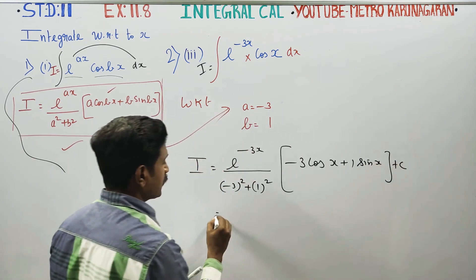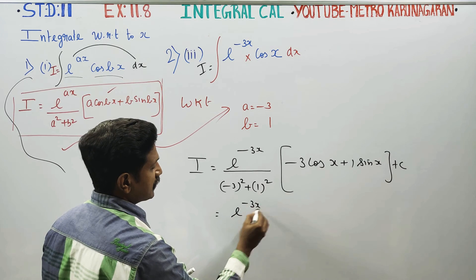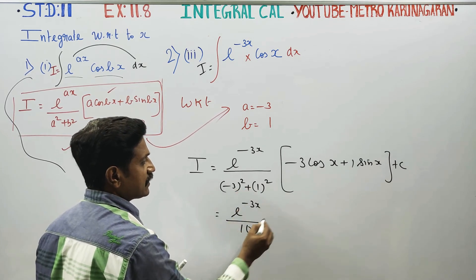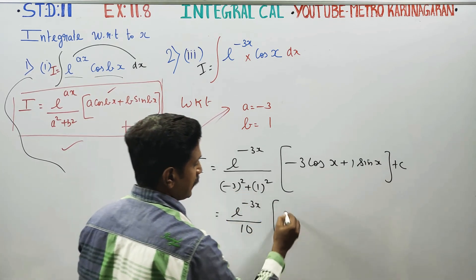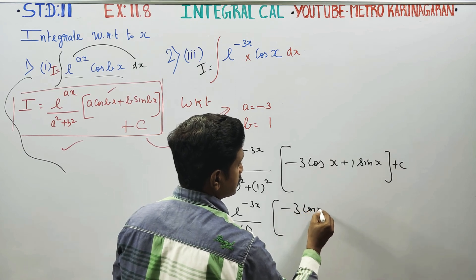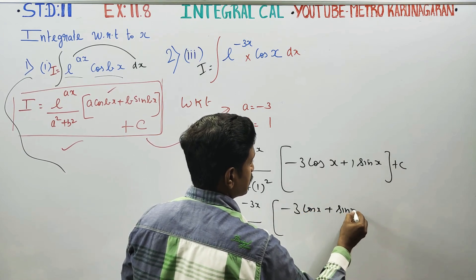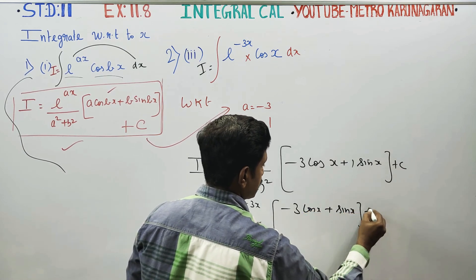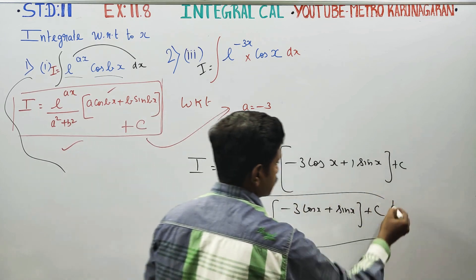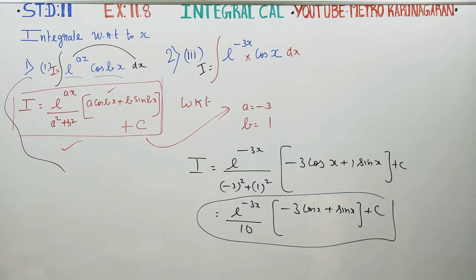After simplification, you get e^(-3x) divided by 10, since 3 squared is 9 plus 1 is 10. The final answer is e^(-3x) times (minus 3 cos x plus sin x) divided by 10, plus C. Thank you.